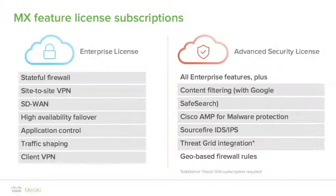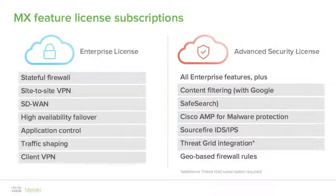Software-defined WAN adds intelligence and automation to your traffic flows. It's a transport-independent service that supports policy-based routing and allows for dynamic path selection based on application type, link quality, and other factors. High availability failover ensures maximum uptime in the event of a device failure. Application control and traffic shaping allow you to get granular with what you want to allow on your network and how much bandwidth to allocate to each application type.